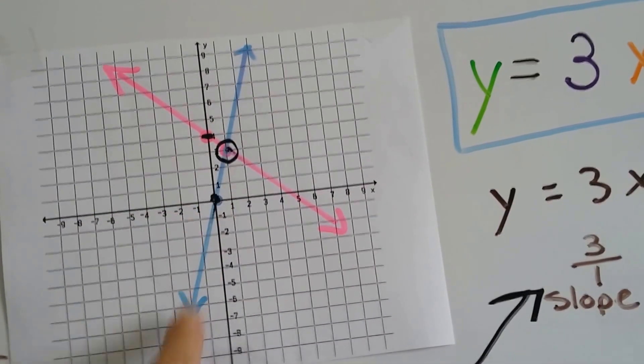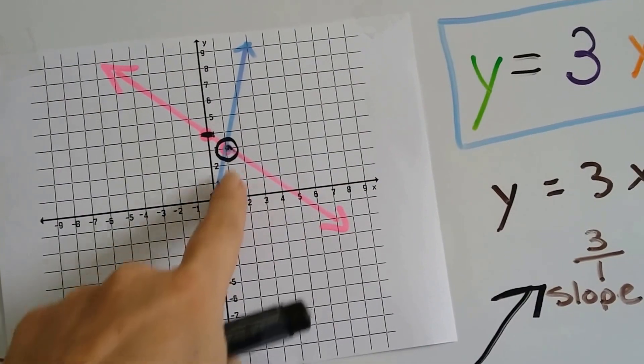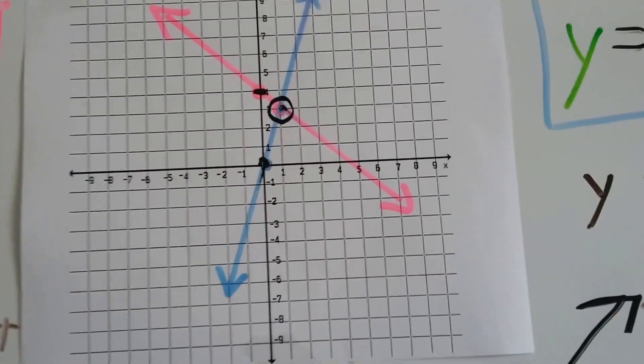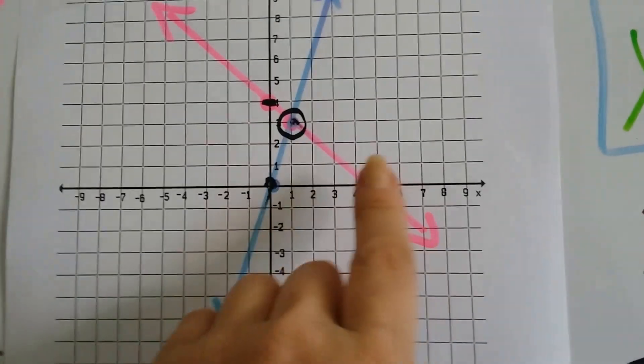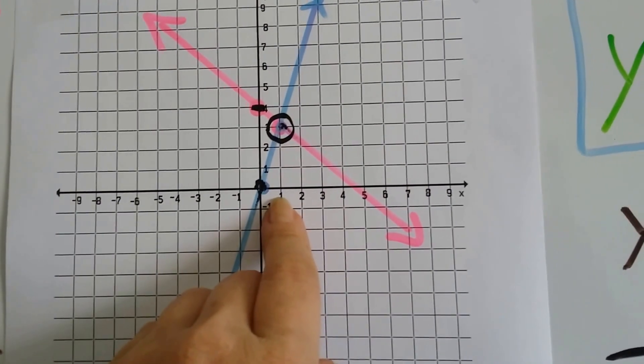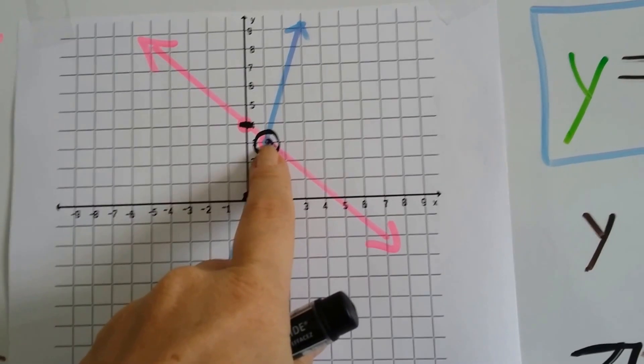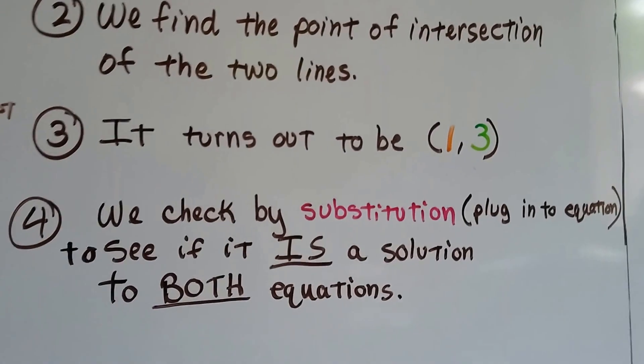We draw our blue line from this point to this point and it continues on. And now we've got an ordered pair. See what the ordered pair is? X is 1 and Y is 3. That's our ordered pair, 1, 3. So it turns out to be 1, 3.